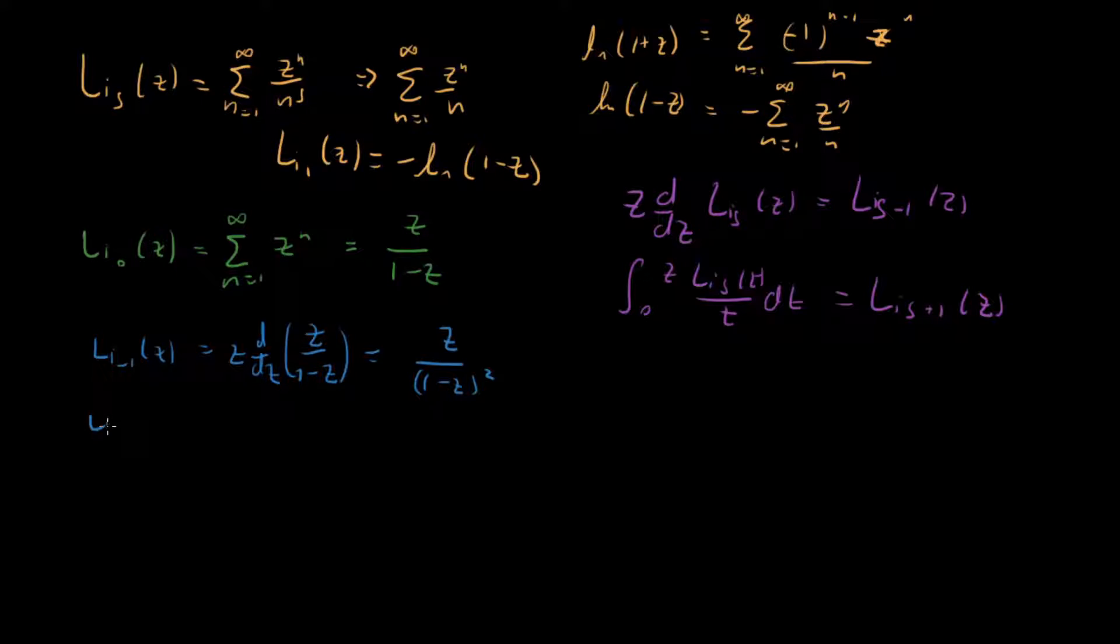We can keep doing the same thing. Just keep on multiplying by z and taking derivatives. And we'll keep on getting stuff like this. If we do it again, we get z times 1 plus z over 1 minus z cubed. And you can keep doing this on and on and on. And you'll ultimately get just a huge product of polynomials on top divided by a bunch of polynomials in the denominator.